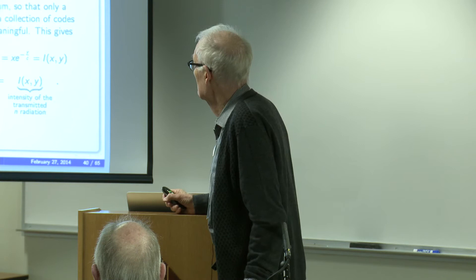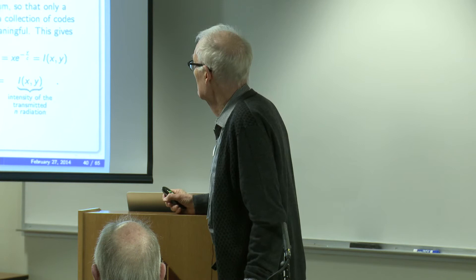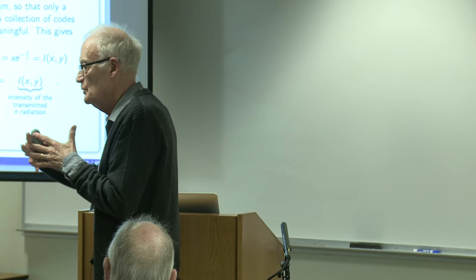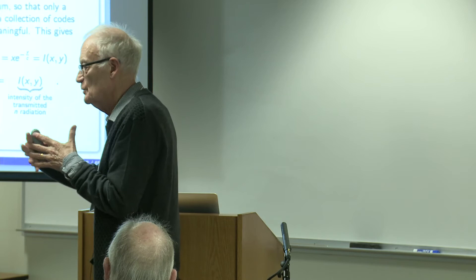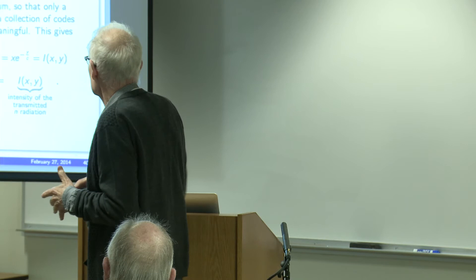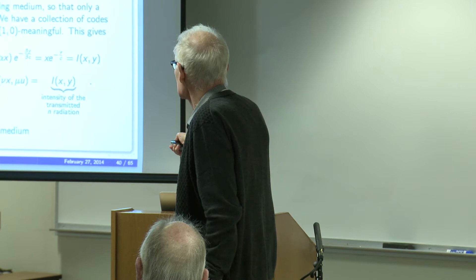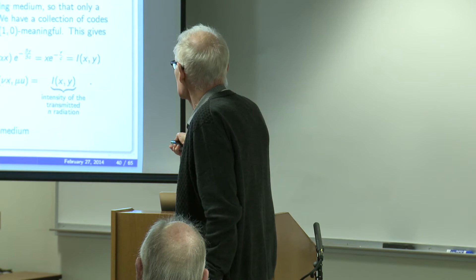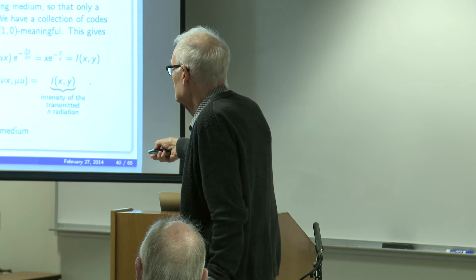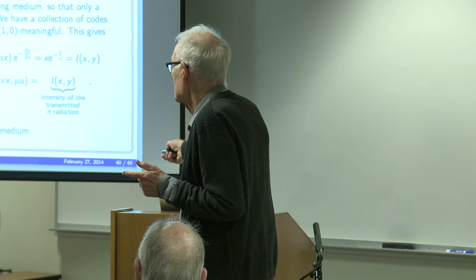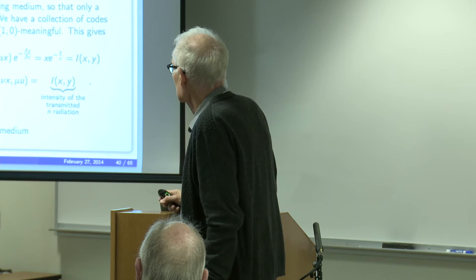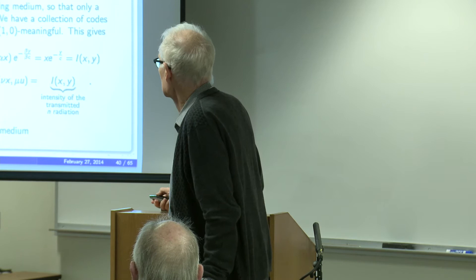We already saw the Lorentz-Fitzgerald contraction. Here is Beer's Law: a class of situations where radiation traverses an absorbing medium. The intensity of radiation that exits is decreased, and the equation describing this is x · e^{−y/C}, where x is the intensity of the incident light, y is the concentration of the absorbing medium, and C is the reference level.